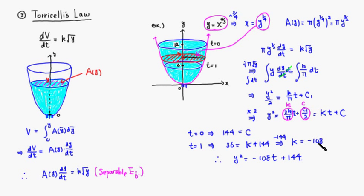We want to know when this tank will be empty, so the depth is going to be zero. We just have to set this equal to zero. Then you see that t is going to be 144 over 108, which you can simplify as four-thirds.